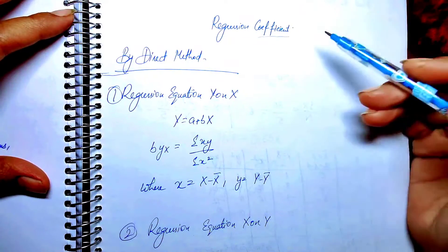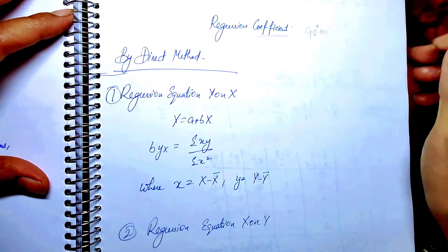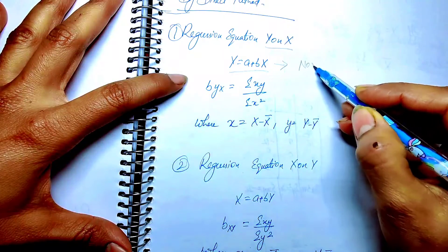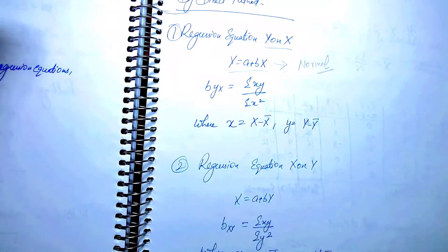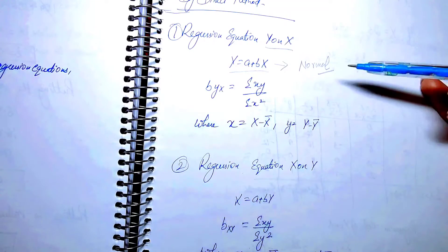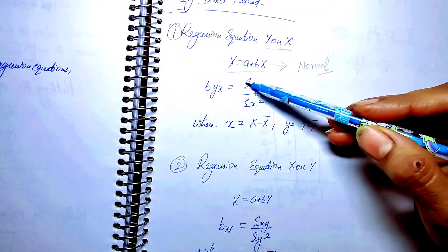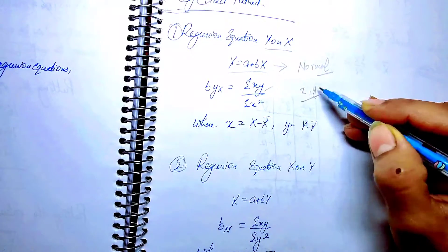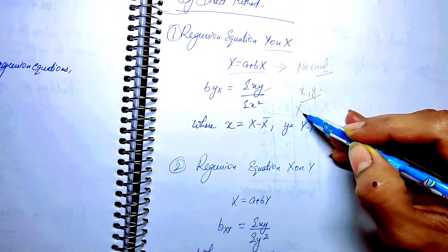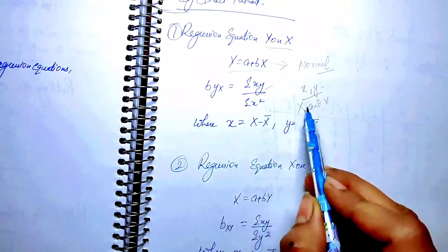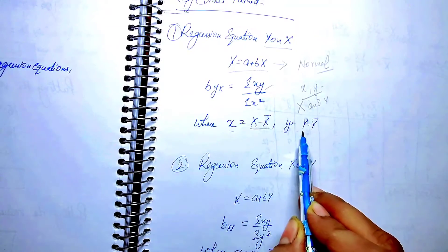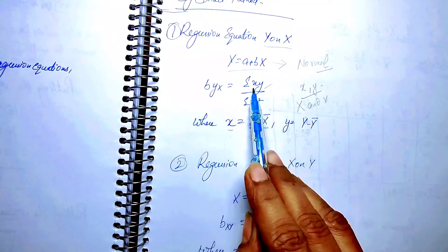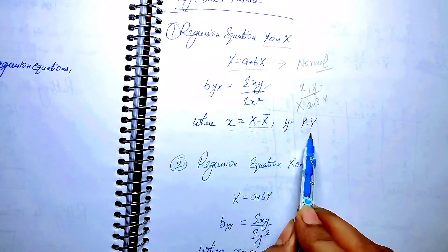With the regression coefficient, we find the coefficient at the central point using the direct method. The regression equation y on x is: y = a + bx. This is the normal equation, same as in the previous tutorial. The coefficient values change based on the dependent variable. For y on x, b is taken as summation(xy) divided by summation(x²). Here, small x = capital X minus mean of X, and small y = capital Y minus mean of Y.